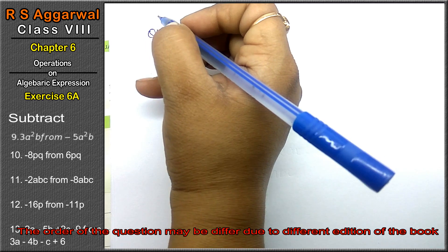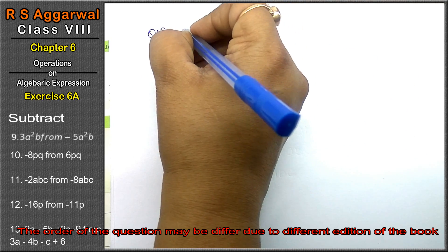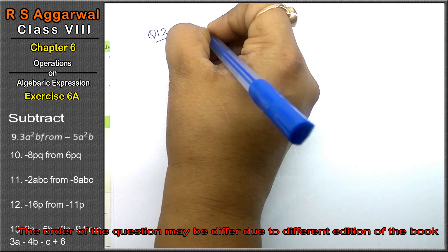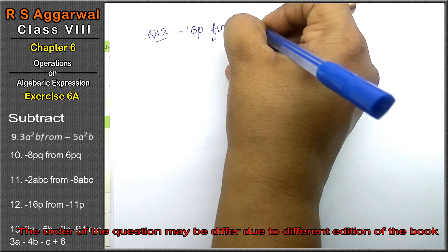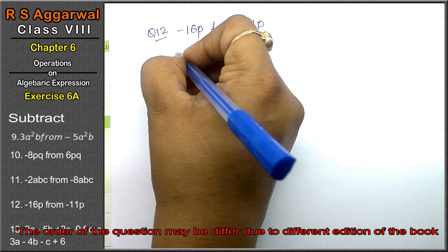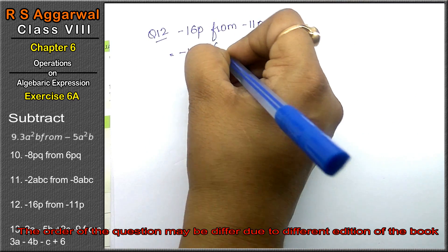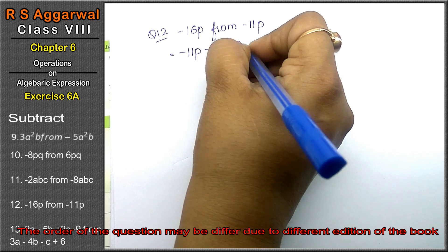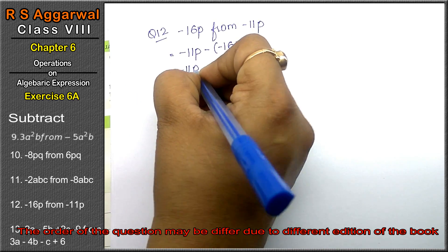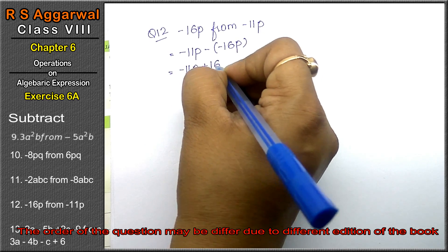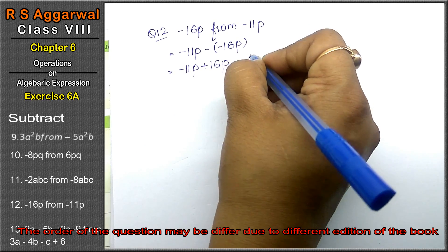Let's do question number 12 of Exercise 6A, algebraic expression. Question 12 is: subtract -16p from -11p. We write -11p first, then apply the subtraction sign, then -16p. So we get: -11p - (-16p) = -11p + 16p = 5p is the answer.